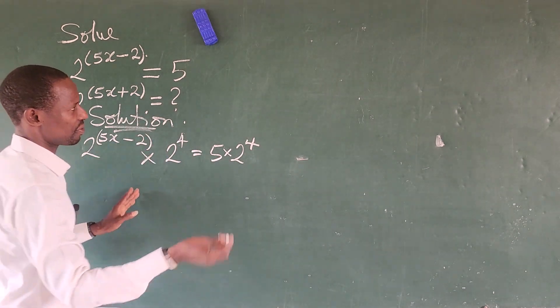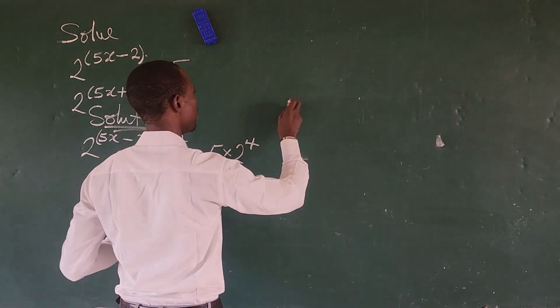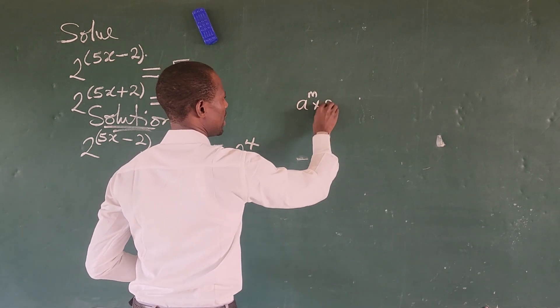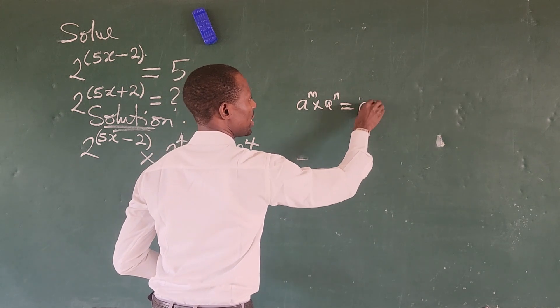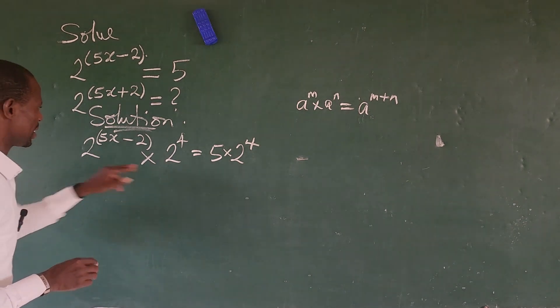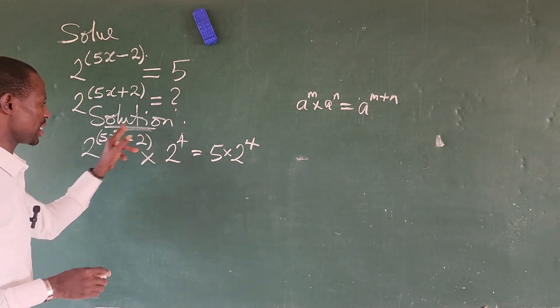Alright, now according to the law of indices, remember, we say that if you have a to the power of m times a to the power of n, this is equal to a to the power of m plus n. So the bases are the same, and so I can add the exponents.